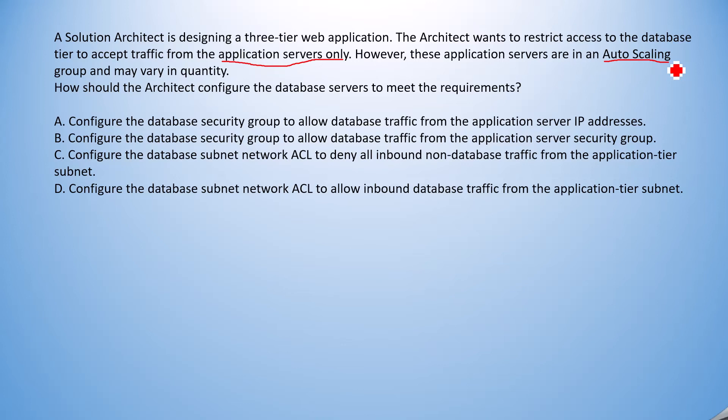Before jumping to the answers, the problem is that we have a three-tier web application — web tier, application tier, and database tier. It's required for the database to accept access from the application servers so that the application servers can communicate directly with the database. The first option says: configure the database security group to allow database traffic from the application server IP addresses.